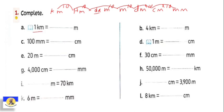Example: one kilometer — they want to change it into meters. Count from kilometer to meter: one, two, three steps. So we multiply by 1000. One kilometer equals one thousand meters. So one times one thousand — we add three zeros — the answer is one thousand.